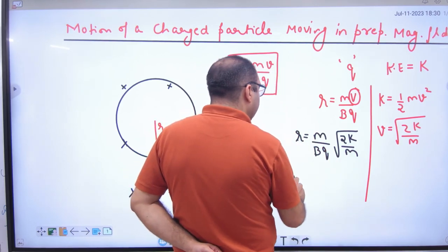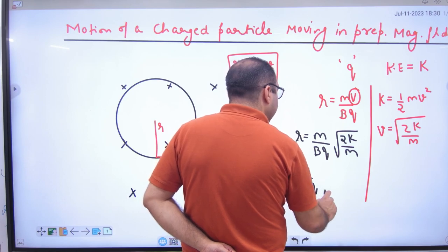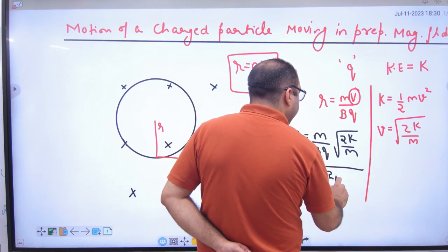And finally, R is equal to 1 divided by bq, times the square root of 2 times K times m.